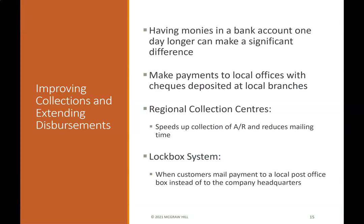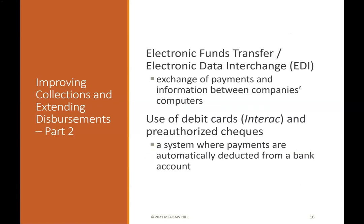Having monies in a bank account one day longer can make a significant difference. Improvements include making payments to local offices with checks deposited at local branches, using regional collection centers to speed up collection of accounts receivable and reduce mailing time, and using a lock box system where customers mail payment to a local post office box instead of company headquarters. Electronic funds transfer, electronic data interchange, debit cards, and pre-authorized checks — where payments are automatically deducted from a bank account — are also used.